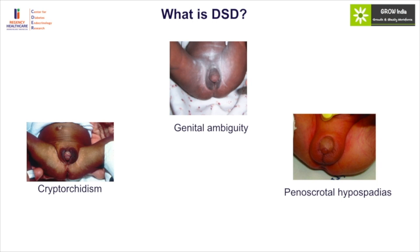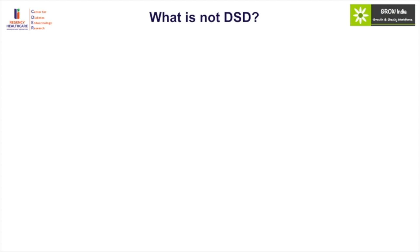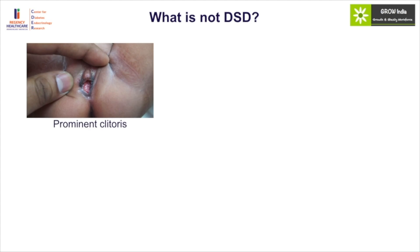Penoscrotal hypospadias should always be evaluated for the possibility of a disorder of sexual differentiation. Any girl with primary amenorrhea along with inguinal swelling should always be considered a possibility that this could be a virilized male who has had such low levels of androgen action or production that it has resulted in a female phenotype. It is important not to unnecessarily investigate for DSD causes.